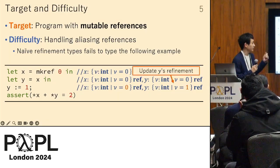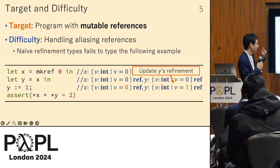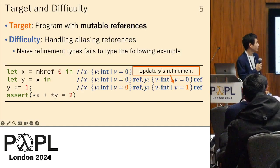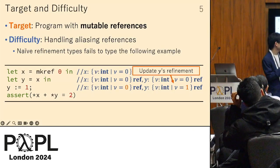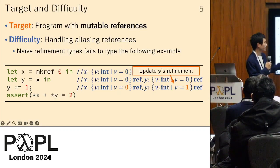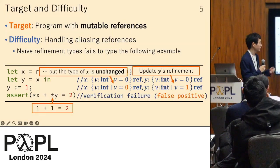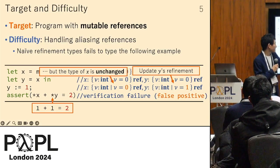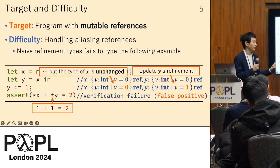The problem arises at the third line because y is updated to have integer value 1, and at the same time the aliasing reference x is also updated to have value 1. However, while we successfully changed y's type, naive refinement types fail to update the type of x, resulting in verification failure. The types say the sum of x and y is 1, but it is actually 2.